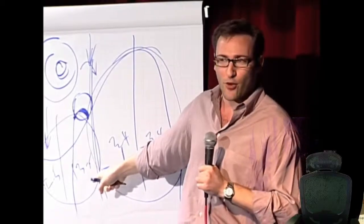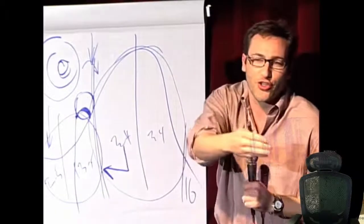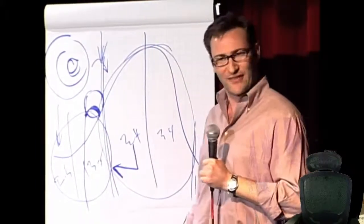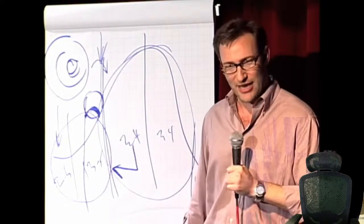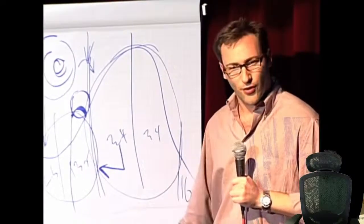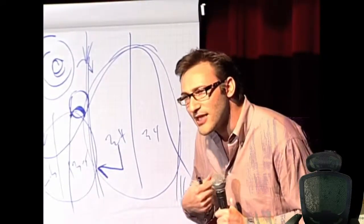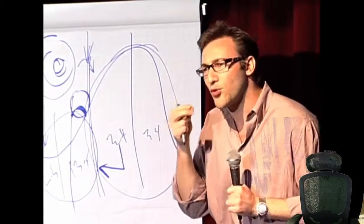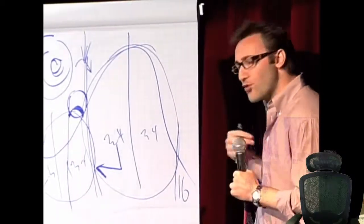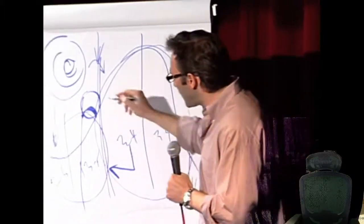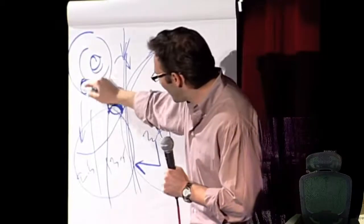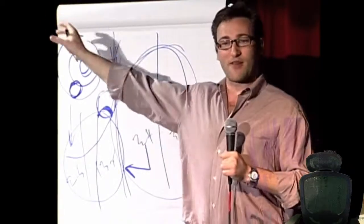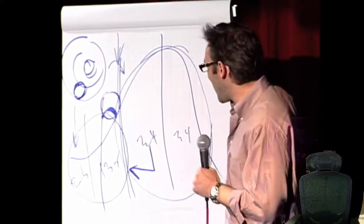These are the people who stood in line for six hours to buy an iPhone when it first came out, even though you could walk in and buy one off the shelf the next week. They spent $40,000 on flat-screen TVs when the technology was substandard — not because the technology was great, but because they wanted to be first. People don't buy what you do; they buy why you do it, and what you do simply proves what you believe.